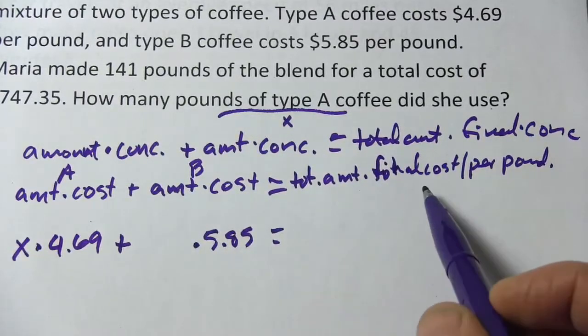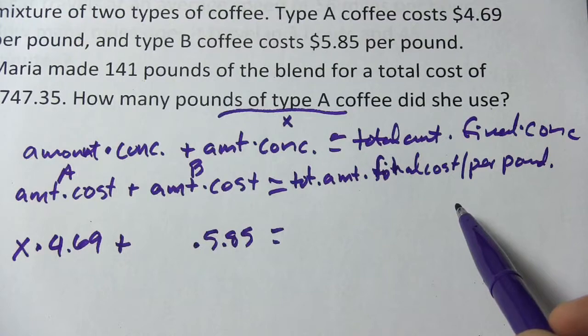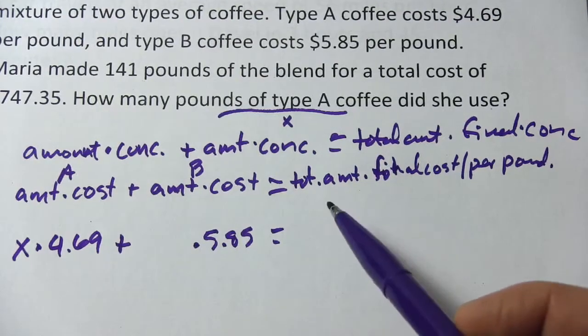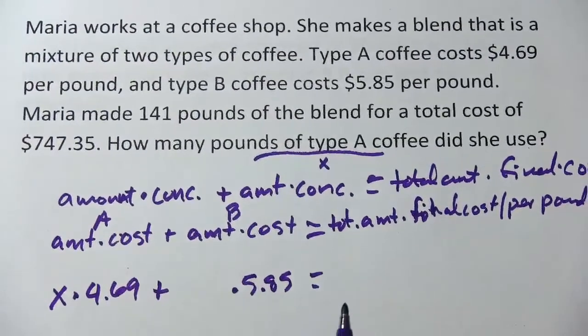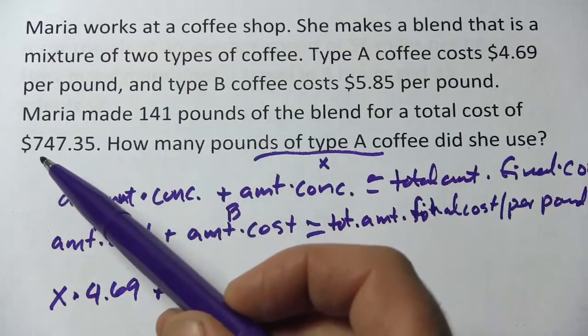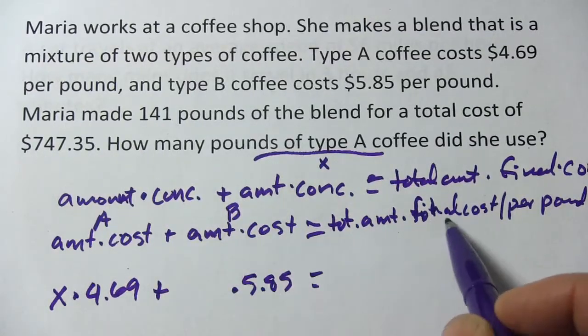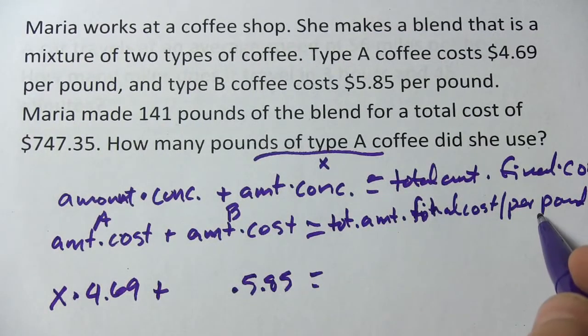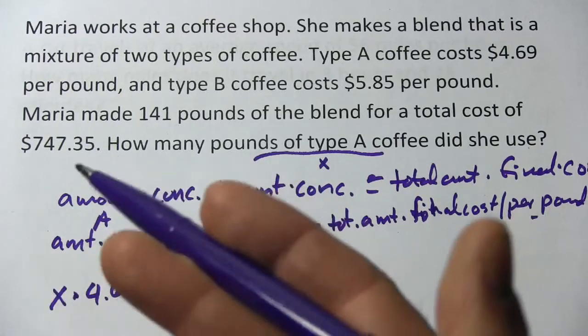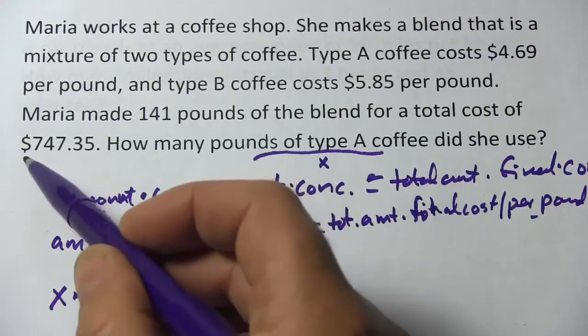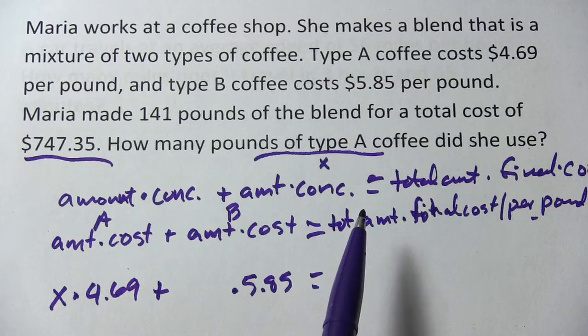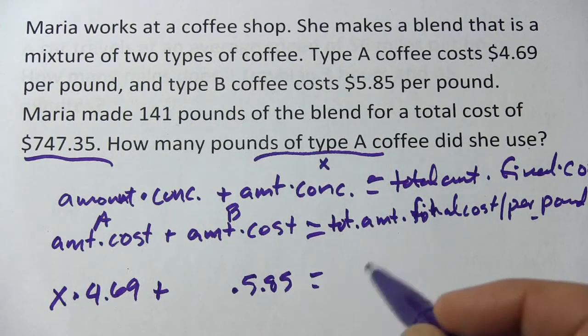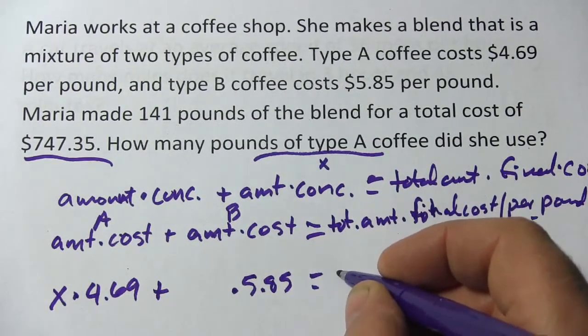Now the total amount times the final cost per pound, we don't have that here either. But they've actually done that work for us. If you multiplied the total amount, the number of pounds, times the price per pound, you get the final cost of the whole batch. And we have that here, $747.35. So that's what I can put on this side of the equation.